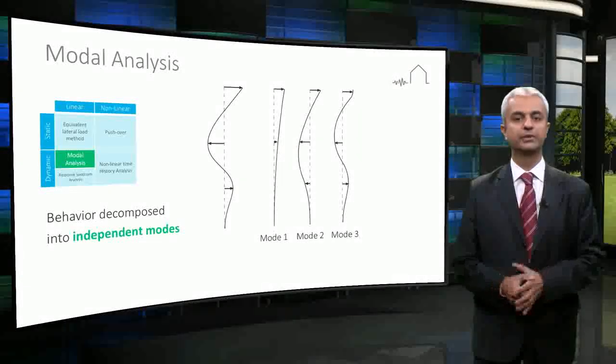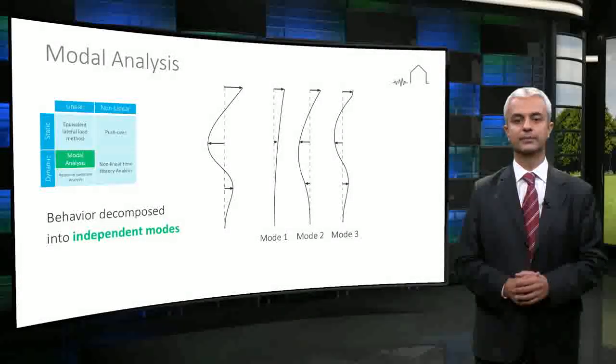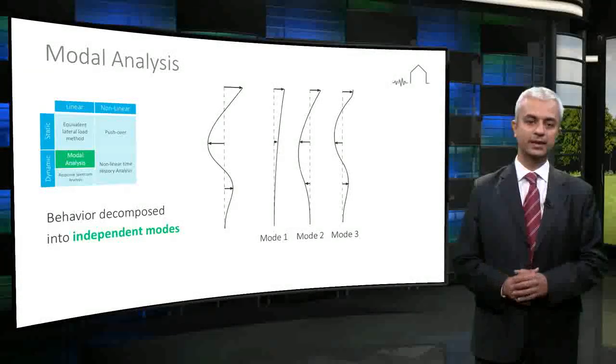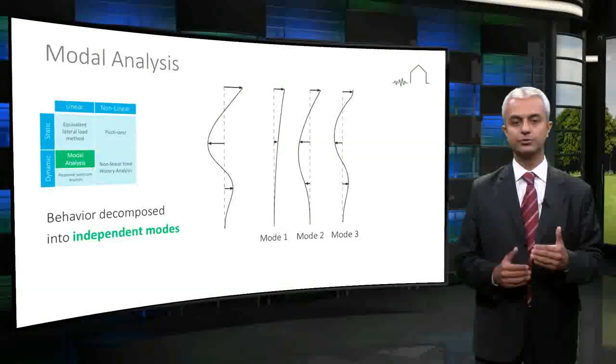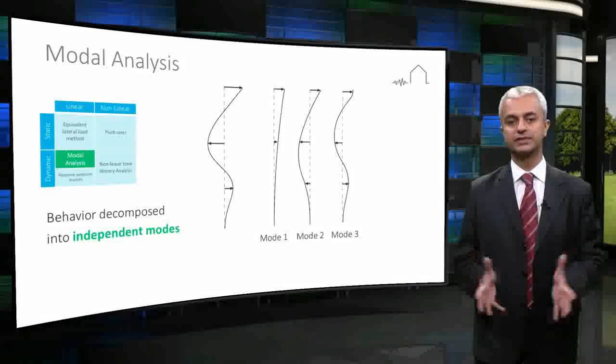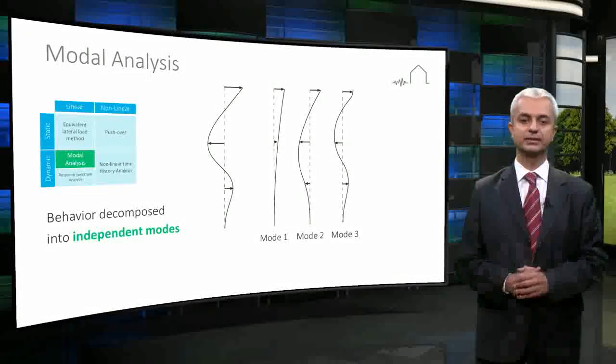In this case, a three degree of freedom system is analyzed and three different mode shapes are shown. When each mode shape is analyzed using earthquake records and the results are superimposed, this is called a modal response history method and it gives very close results to time history methods.